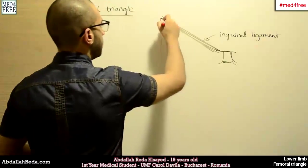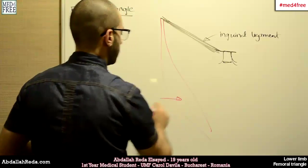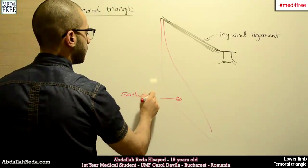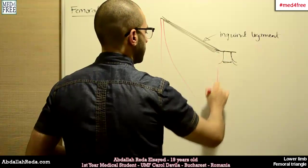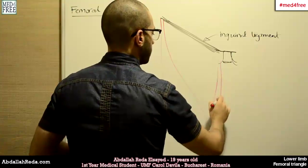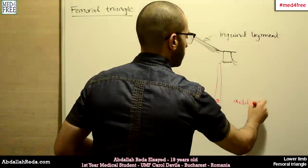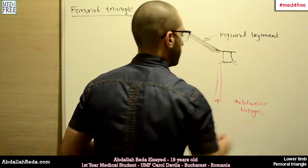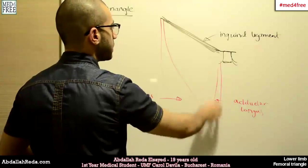And here we have the Sartorius Muscle. This is Sartorius. And this is Adductor Longus Muscle. Sartorius, Adductor Longus,